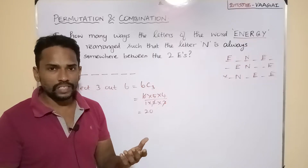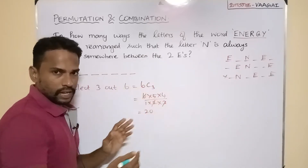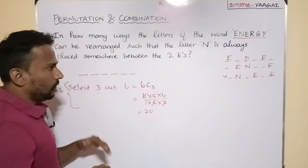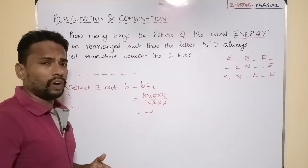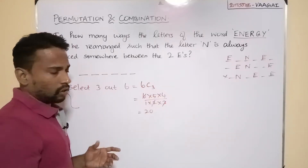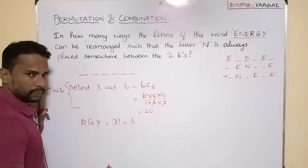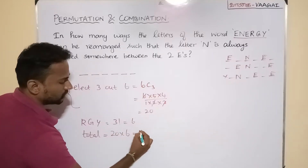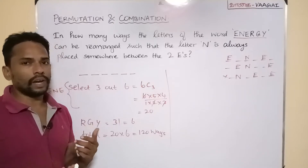We don't need to arrange because E comes first, then N, then the other E — changing this order would break the given condition. So these three letters can be placed in 20 different ways. Now for the other three letters remaining — R, G, and Y — there is no condition. There are three other slots left over, and we arrange R, G, Y in them, which gives 3! = 6 ways. So the total overall number of ways is 20 × 6 = 120 ways.